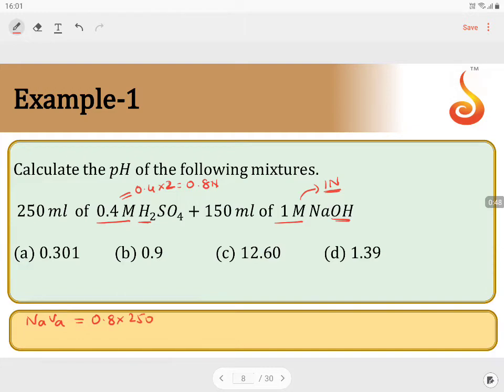This comes to 200 milliequivalents. Same way, normality of base times volume of base, NBVB, equals 150 times 1, which is 150 milliequivalents. This clearly indicates the milliequivalents of acid exceeds the milliequivalents of base.